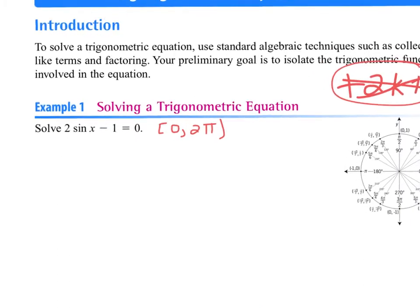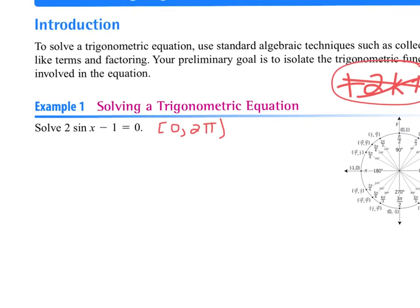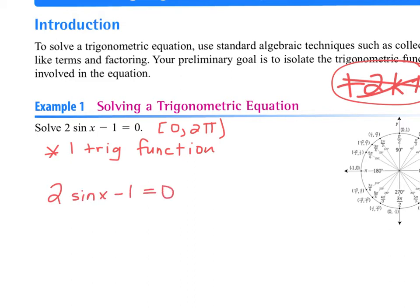There are different kinds of problems, just like you have different factoring problems. If you look at this example, this one has one trig function — just one single trig function. The single trig function is sine of x. I'm going to rewrite the problem: 2 sine x minus 1 equals 0. The sine and the x go together.